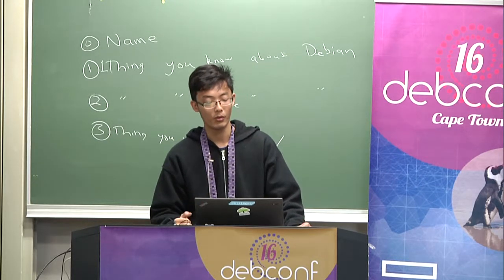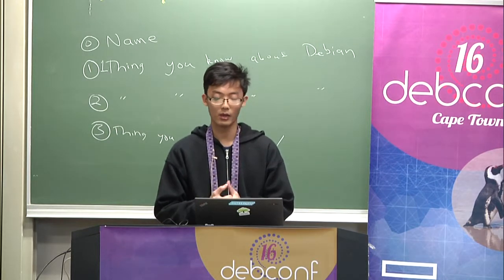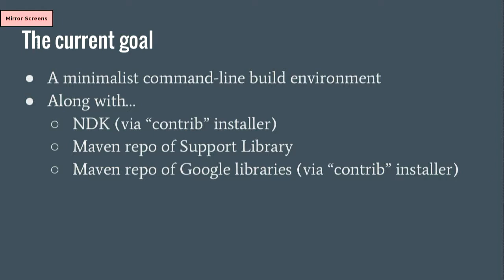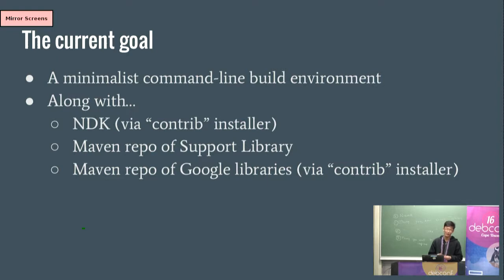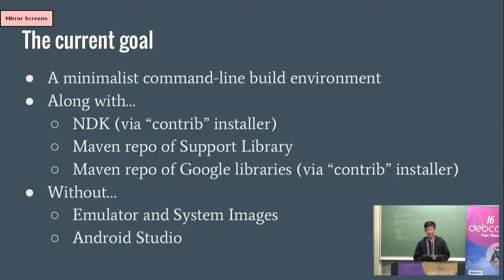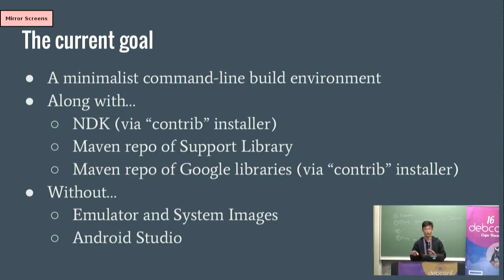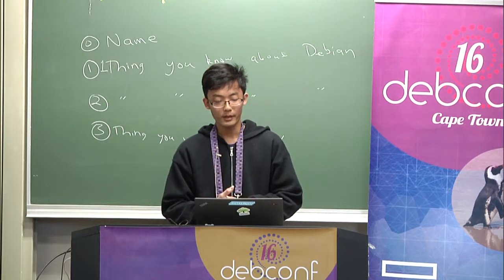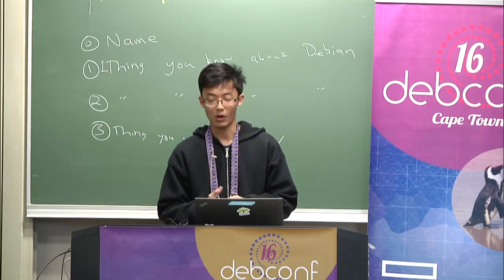We will additionally do NDK and support library and the Google libraries, because they are sometimes necessary to build Android apps. The NDK is too complicated to build from source for now, so we are packaging it via an installer package. The Google libraries are proprietary software, so they are also via installer packages. We are not doing the emulator or system image for now because the system image is basically an entire Android system needing several GB of source code — too big for Debian. Android Studio is also too big for us, so we are not doing that for now.